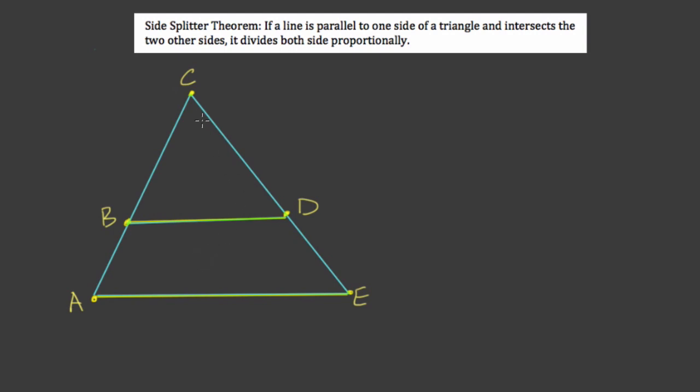What you would do if you know that ACE is a triangle is establish that this angle here, that's angle CBD, that's congruent to CAE right here because two parallel lines form corresponding congruent angles, and CDB is congruent to CEA. So those two angles are equal.